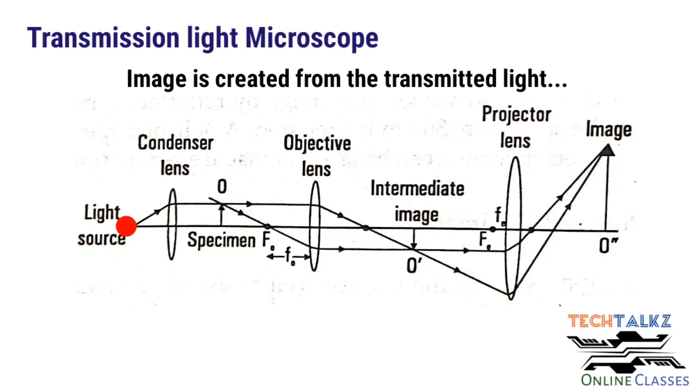And this is the light source. And the condenser lens will direct the light rays to the specimen. Then some amount of light will pass through the sample undisturbed. And this is called the direct light. And some of the light that passes through the specimen is deviated.